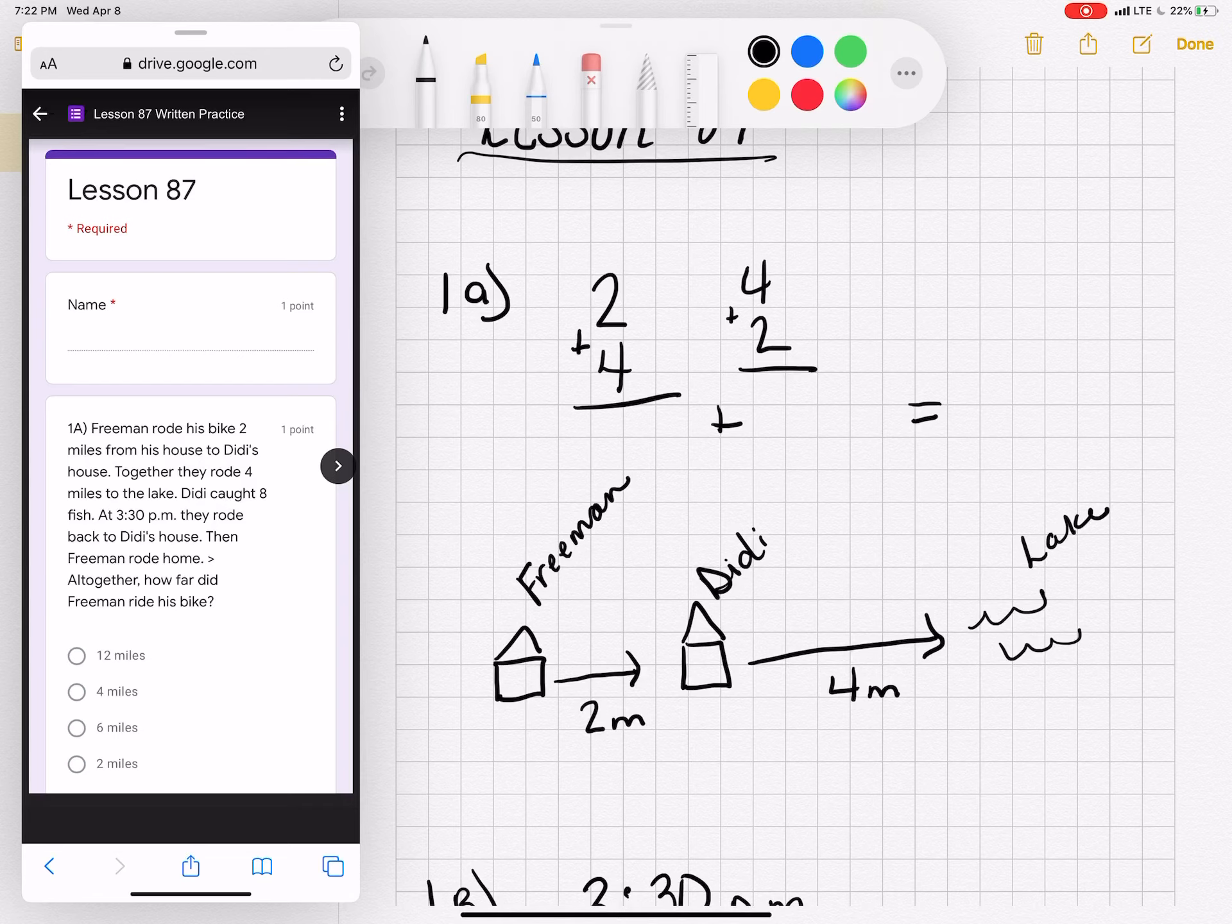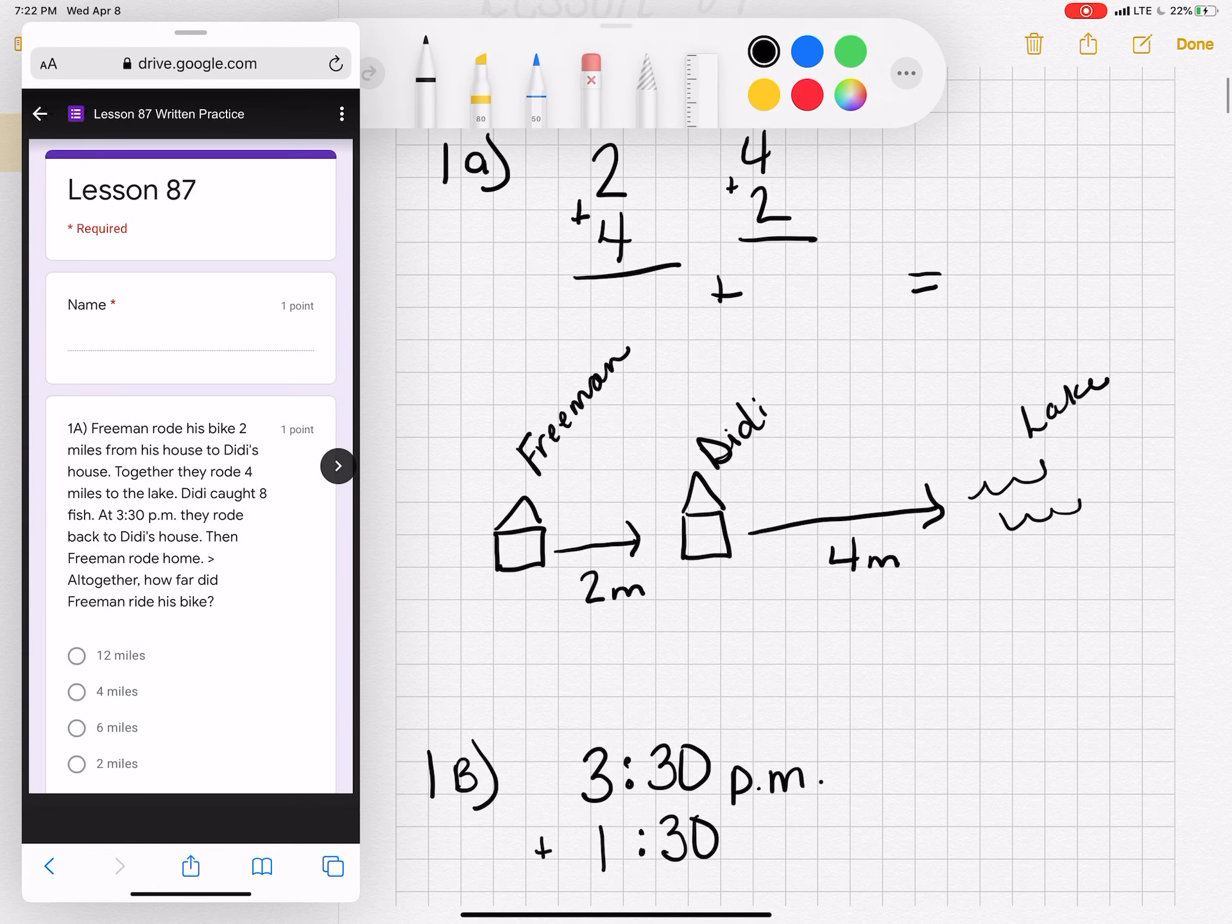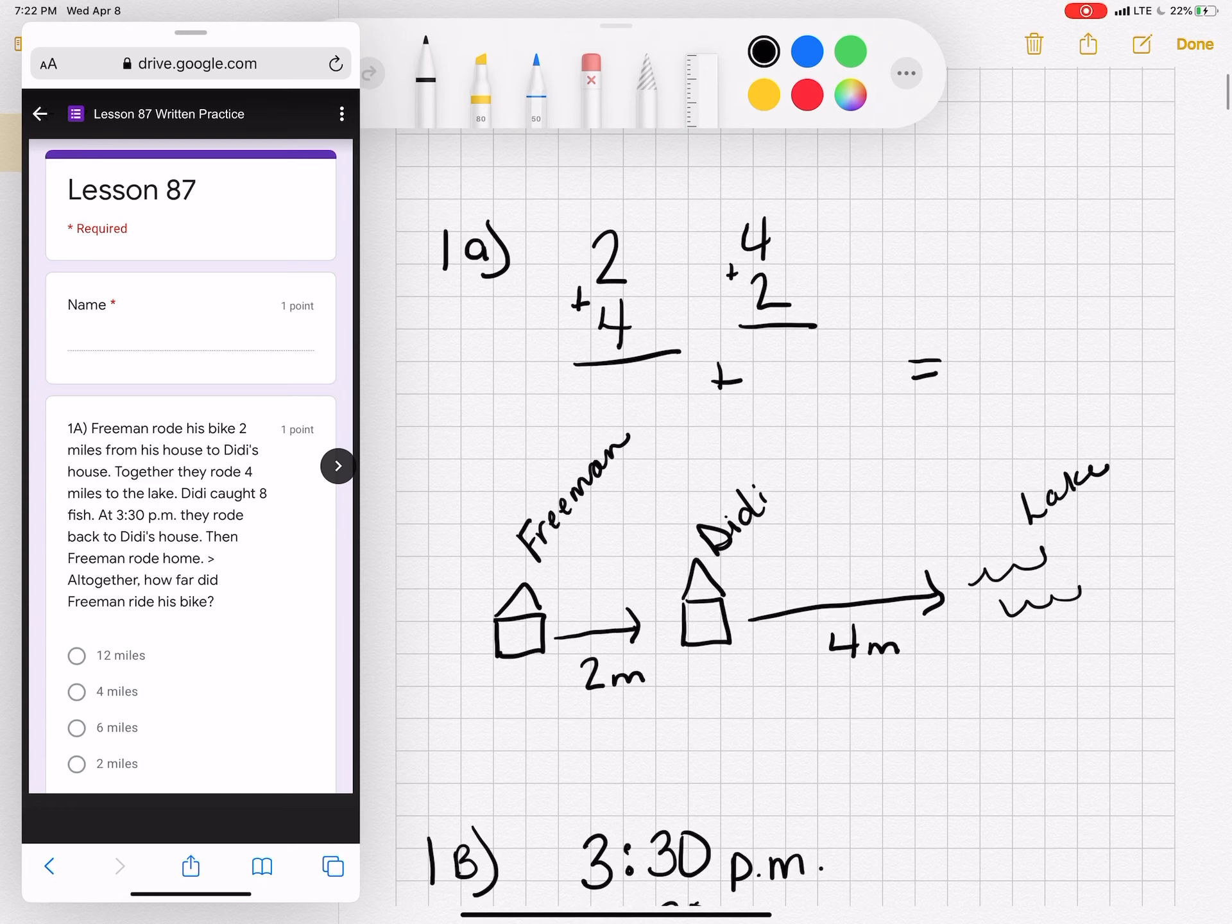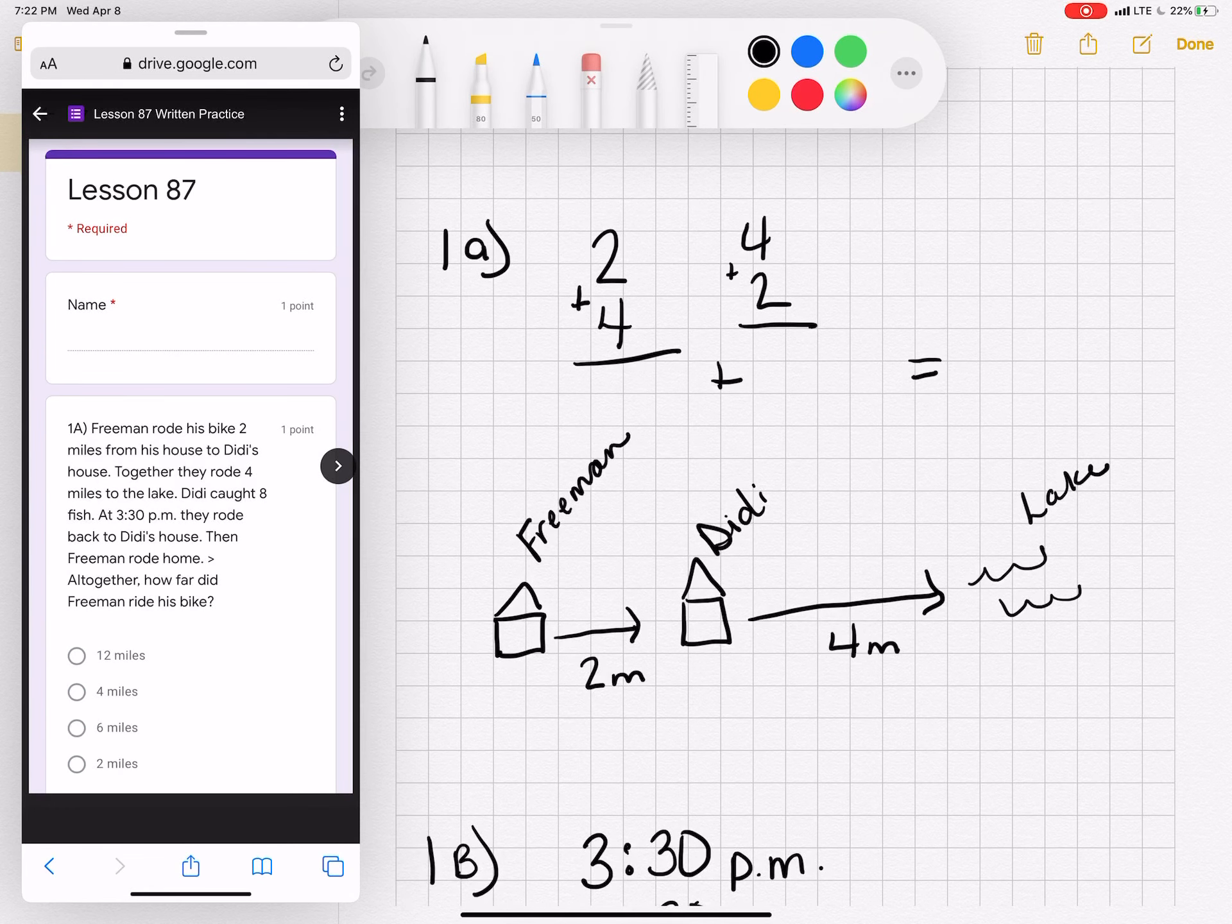Number 1A says that Freeman rode his bike two miles from his house to Dee Dee's house. Together they rode four miles to the lake. Dee Dee caught eight fish. At 3:30 they rode back to Dee Dee's house, then Freeman rode home. So I drew a little picture because that's a lot of information, and for 1A they only want to ask, altogether how far did Freeman ride his bike?